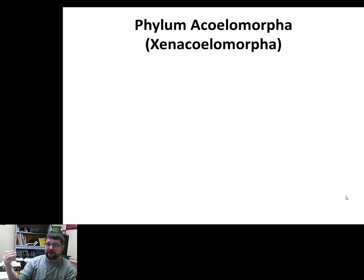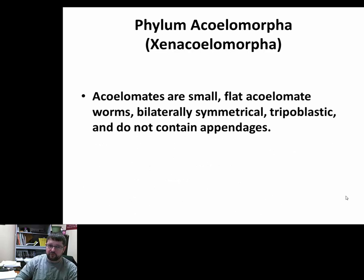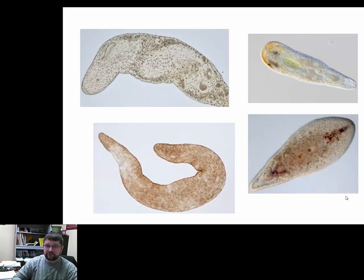Regardless, Acoelomorpha, if it's not the phylum's name, it's the subphylum's name, so it's still related. Acoelomates are what are typically called flatworms or flat acoelomate flatworm or acoelomate worms. Just like other Lophotrochozoans, they are bilaterally symmetric, triploblastic, and they do not have a coelom. These guys also do not have appendages, so they're truly like a worm, but they're not segmented.